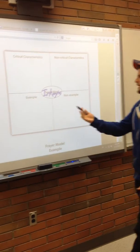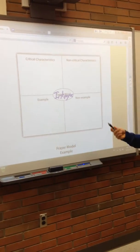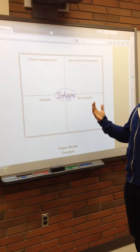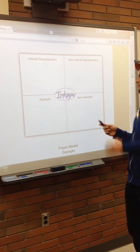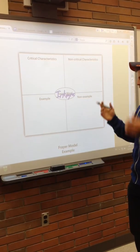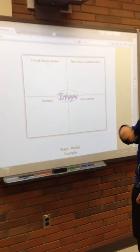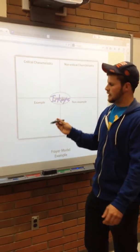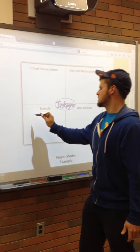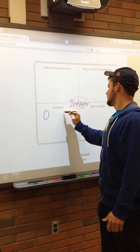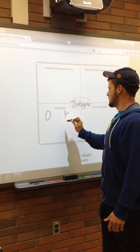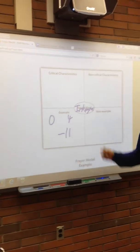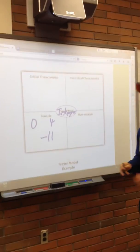So within integers, maybe we're at the end of the unit and students are trying to think of what integers are, what natural numbers, what rational numbers, what all these different things are. So when we're talking about integers, we ask: what are examples of integers? And some students will say 0, someone will say 4, someone will say negative 11. These are all examples of integers.